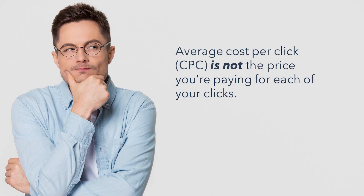Generally speaking, the ad with the highest ad rank gets to show in the top position, and the ad with the second highest ad rank gets to show in the second position, assuming the ads clear the relevant thresholds, and so on. Finally, there's the quality score.